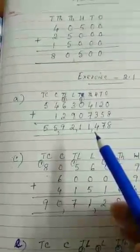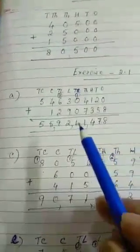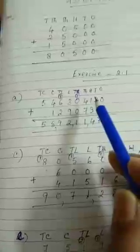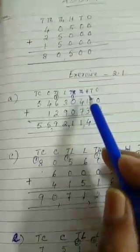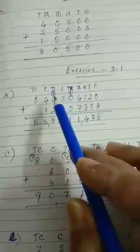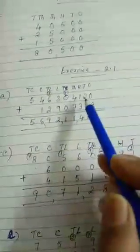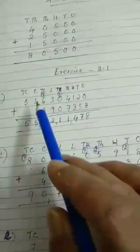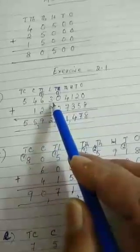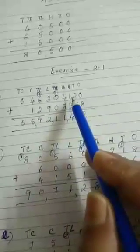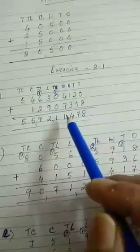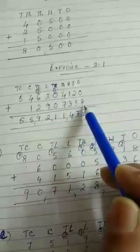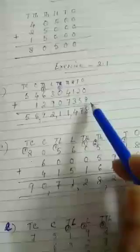Now, let us take the first sum of exercise 2.1, sum number A. So here first write the Indian place value chart, that is, ones, tens, hundreds, thousands, ten thousands, lakhs, ten lakhs, crores, ten crores. So write the first number under this. This is 54 crores, 63 lakhs, 4120. The second number 1 crore 29 lakhs 7358.